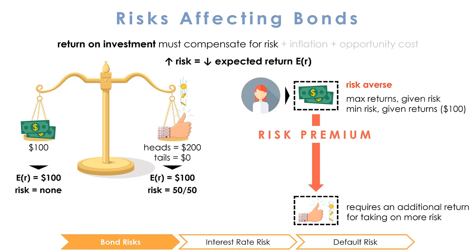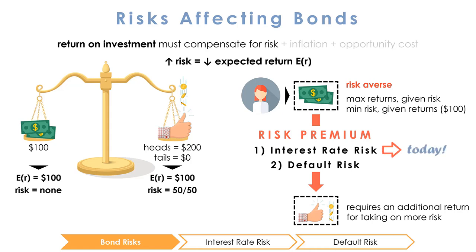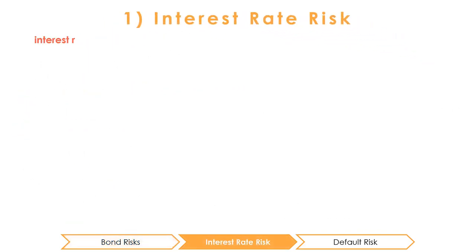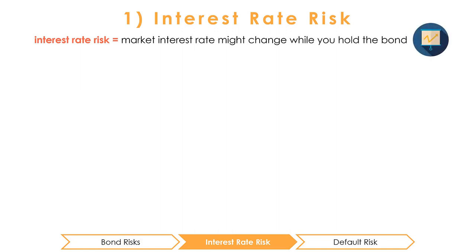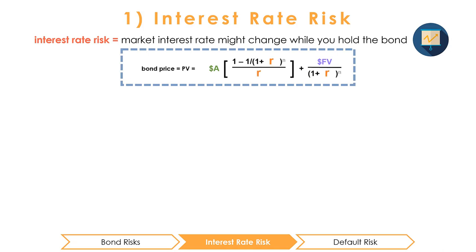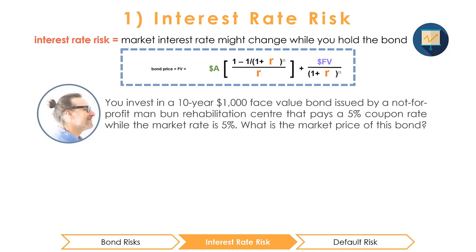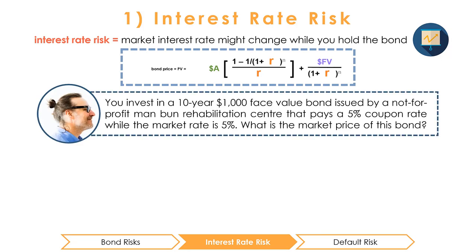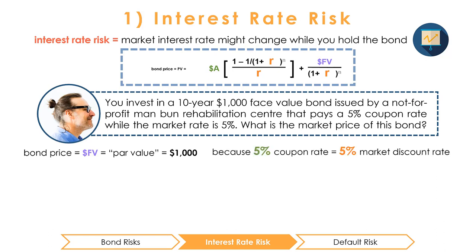So what risks do investors need to consider? There are two key risks that impact the expected return on a bond: interest rate risk and default risk. In this video we will discuss interest rate risk. First, let's talk about interest rate risk — this is the risk that the market interest rate will change while you are holding a bond. Recall that when the interest rate rises, the value of a bond falls. For example, let's say you invest in a 10-year $1,000 face value bond issued by a non-for-profit man bun rehabilitation center that pays a 5% coupon rate while the market rate is 5%. We know that this bond would currently sell at its par or face value of $1,000, since the 5% coupon payments exactly compensate the investor for her risk, inflation, and opportunity cost.